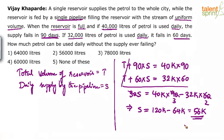Now what is the actual question? It asks how much petrol can be used daily without the supply ever failing. If you just depend on the pipeline supply, you can use 56,000 liters every day, because the pipeline can supply 56,000 liters — whether the reservoir is full or not. Every day it gives 56,000 liters, so the supply will never fail.